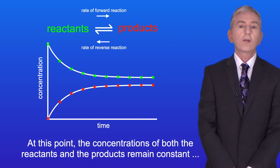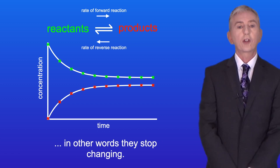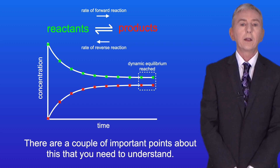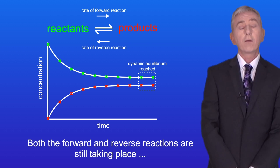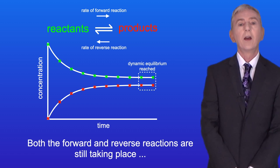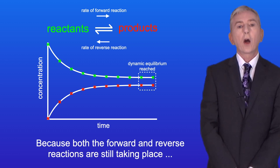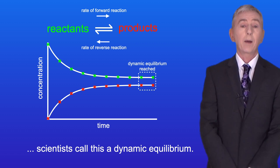At this point, the concentrations of both the reactants and the products remain constant — in other words, they stop changing — and scientists say that the reaction has reached equilibrium. When we reach equilibrium, the forward and reverse reactions have not stopped. Both reactions are still taking place, but at the same rate, which is why the concentrations of reactants and products are constant. Because both reactions are still taking place, scientists call this a dynamic equilibrium.